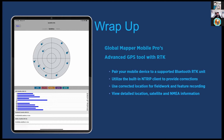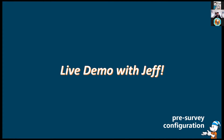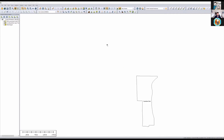Dave today is going to use Bad Elf's NTRIP client for his work, but you can also use Global Mapper Mobile's built-in NTRIP client and connect to your state sources. Let's take a look at how I might prep some data in Global Mapper before sending it out into the field. We now have Global Mapper Desktop up on my display — what we're looking at is some very generic source data.